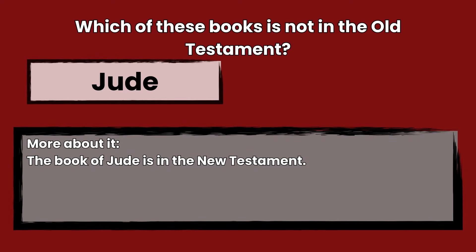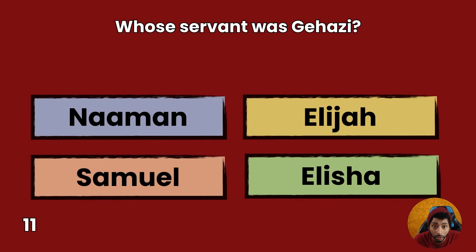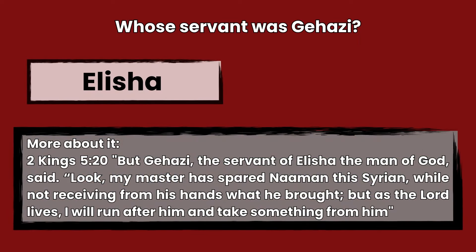Question 11: Whose servant was Gehazi? Naaman, Elijah, Samuel, or Elisha? Answer: Elisha. 2 Kings 5:20 — But Gehazi, the servant of Elisha, the man of God, said, Look, my master has spared Naaman this Syrian, while not receiving from his hands what he brought. But, as the Lord lives, I will run after him and take something from him.